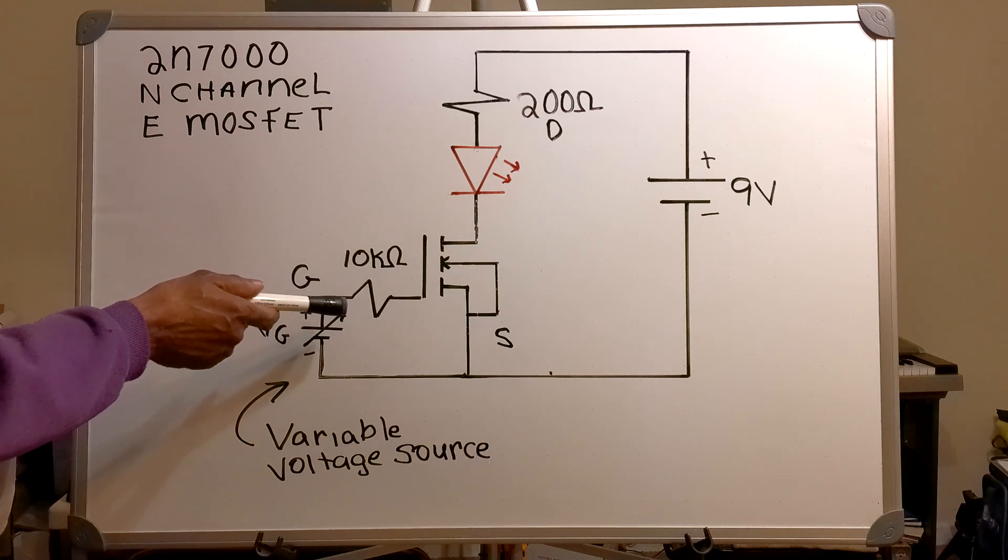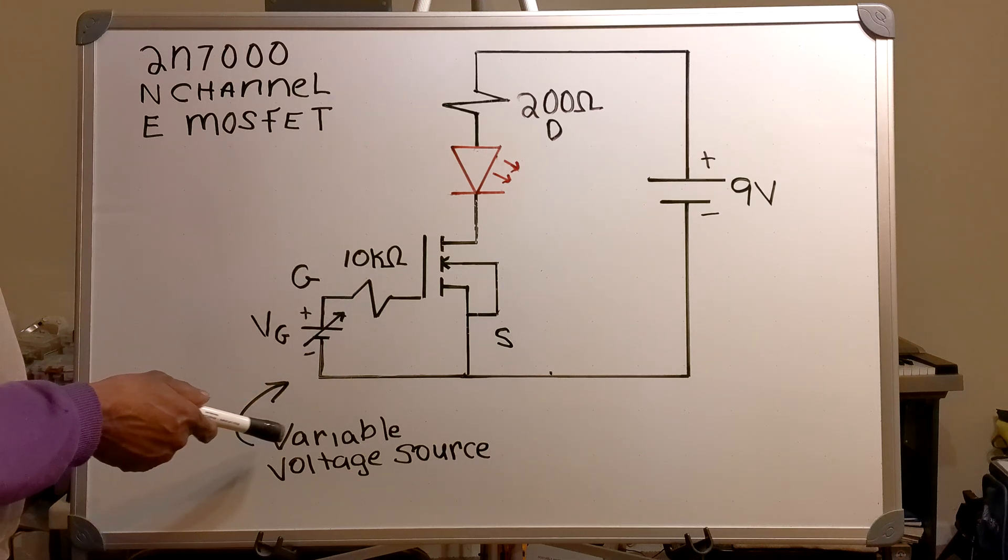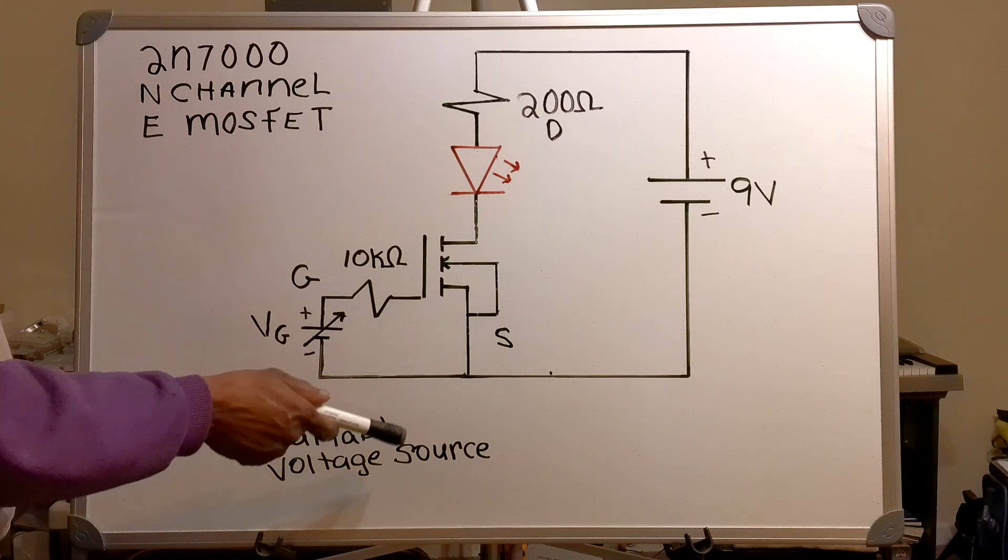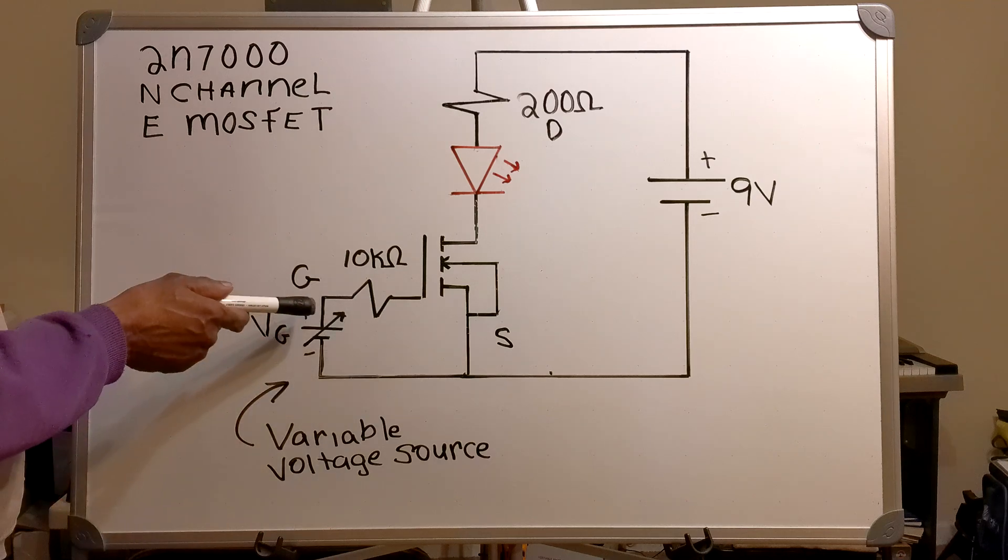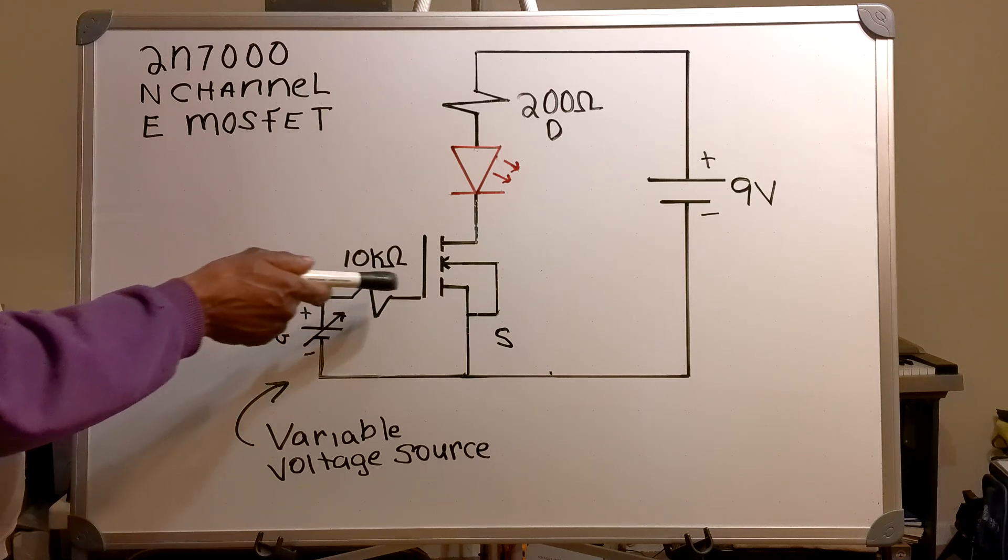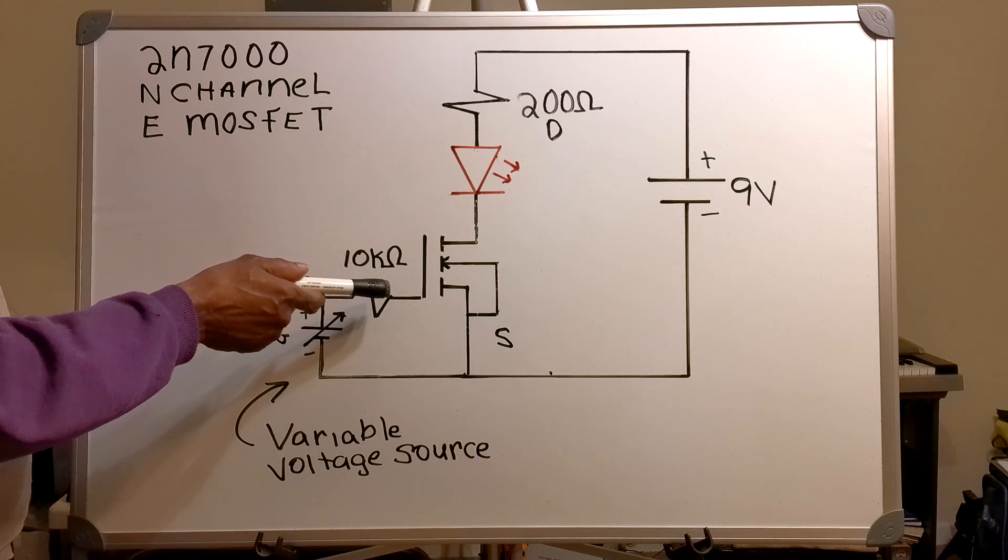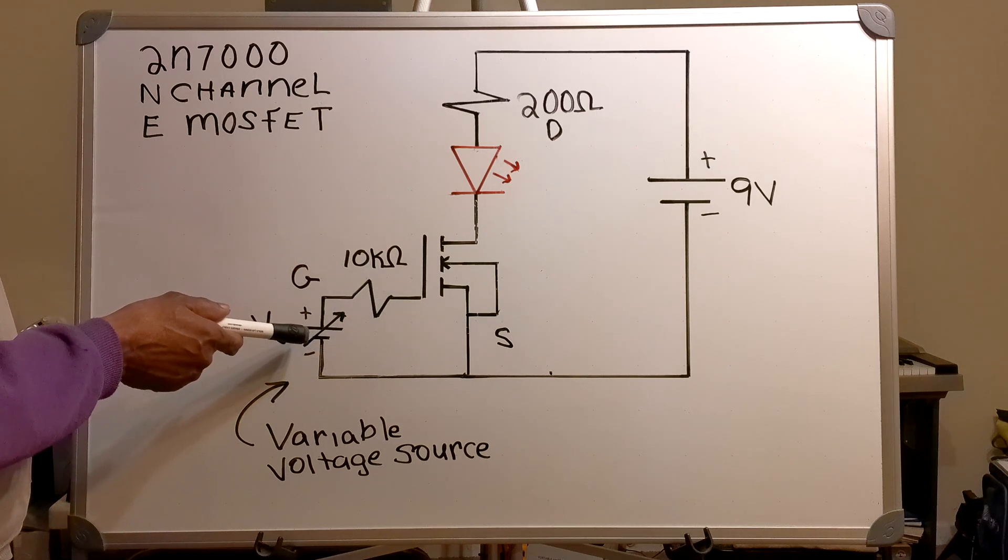On the gate I've got a variable voltage source, and I also have a 10K ohm resistor in series with my voltage source.